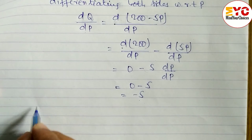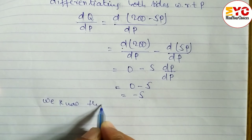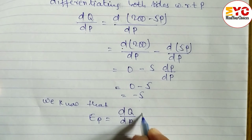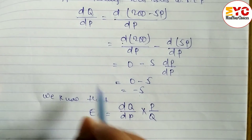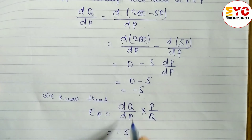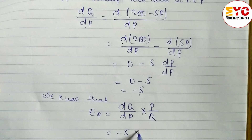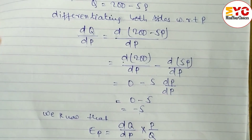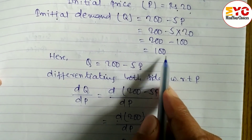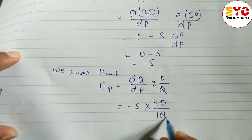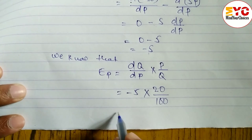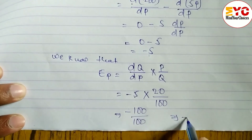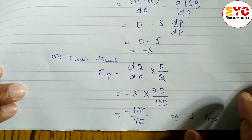Now we apply the price elasticity of demand formula: ep equals dq/dp multiplied by p/q. The value of dq/dp is minus 5, p is 20, and q is 100. So ep equals minus 5 into 20 divided by 100, which gives minus 100 divided by 100, equal to minus 1. That is the answer.